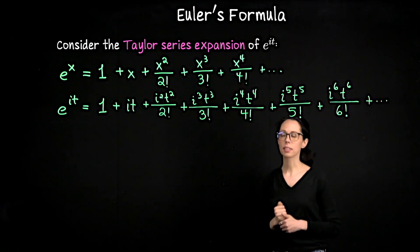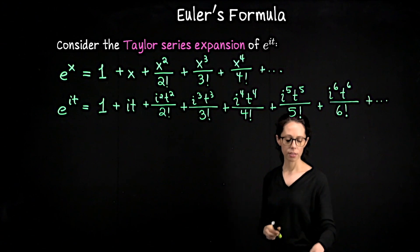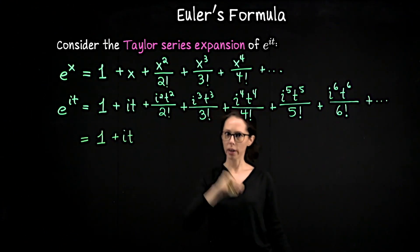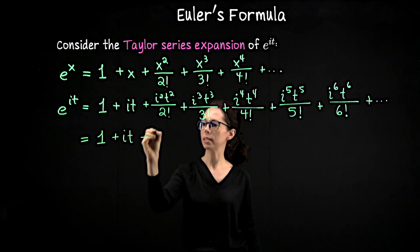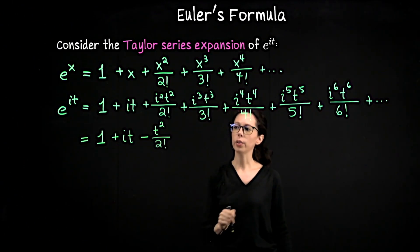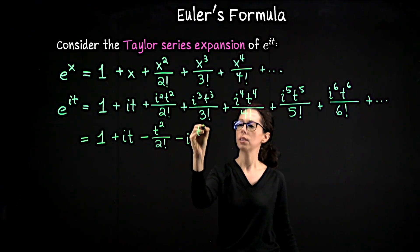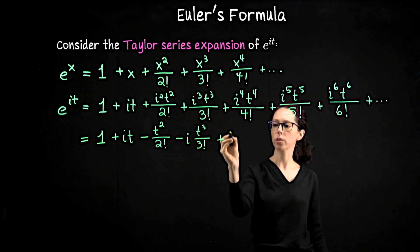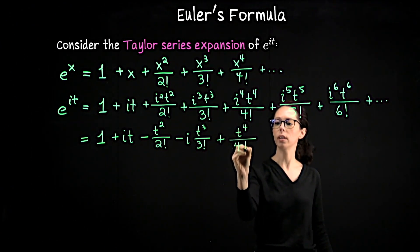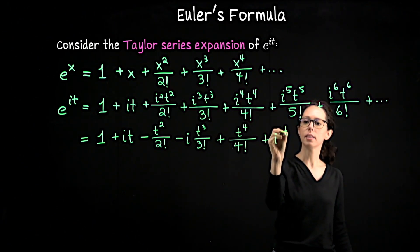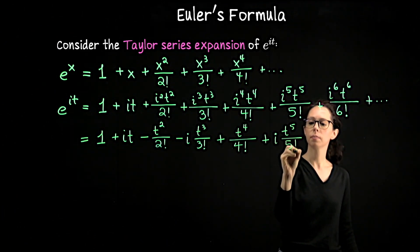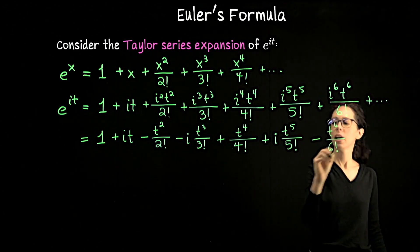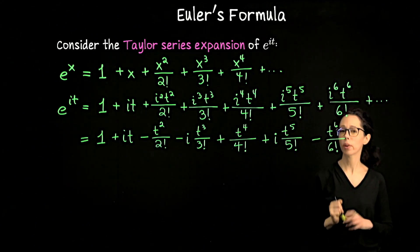Let's go through this and write every power of i in its simplest form. The right-hand side becomes 1 plus it, then i squared is negative 1, so minus t squared over 2 factorial, then i cubed is negative i, so minus it cubed over 3 factorial, then i to the 4th is 1, so plus t to the 4th over 4 factorial, then plus it to the 5th over 5 factorial, then i to the 6th is negative 1, so negative t to the 6th over 6 factorial. See if you can write down the 7th order term.